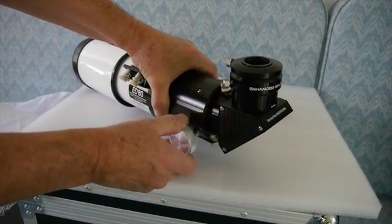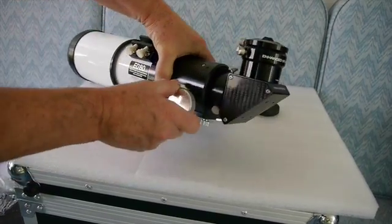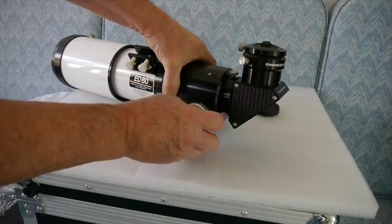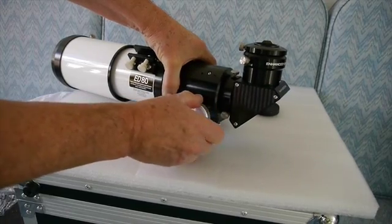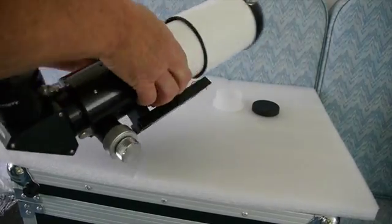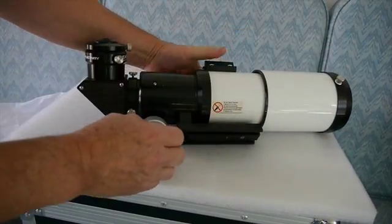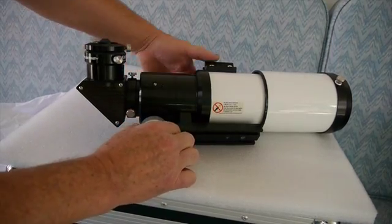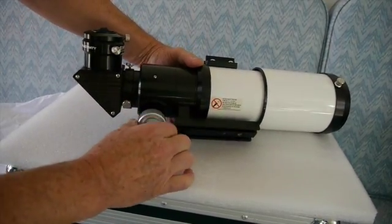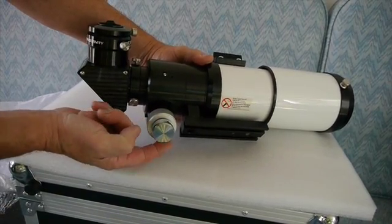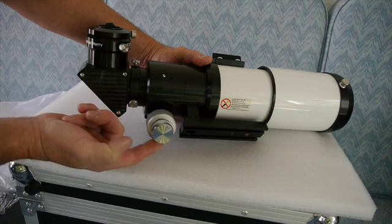And this focuser appears to be very nice, very smooth. It's a dual speed. I've never owned a telescope with a dual speed focuser. So this is going to be nice. I'll flip it around here so you can see the bigger knob is the faster speed. And I'll get out of the way here so you can see this fine focus adjustment, which is this one right here. Very nice.